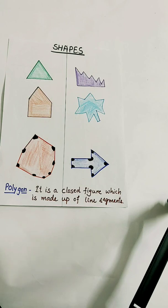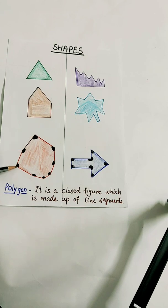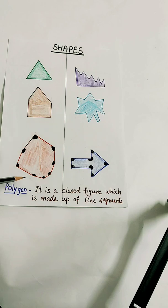Let us start discussing the very first property. The first property is: all interior angles measure less than 180 degrees in a convex polygon. You can see I have marked all the angles here in black color, and all these marked angles are less than 180 degrees.